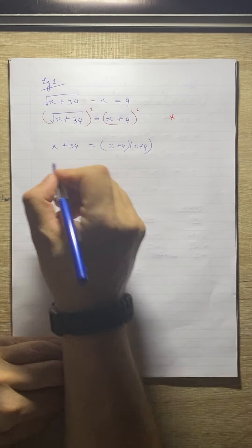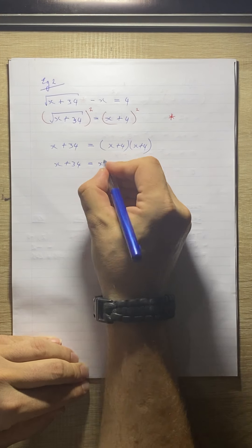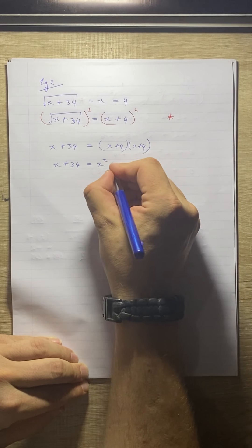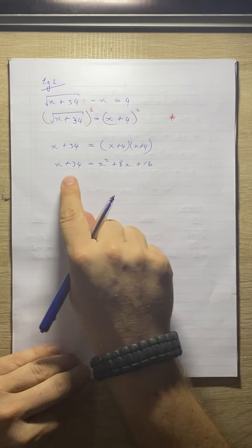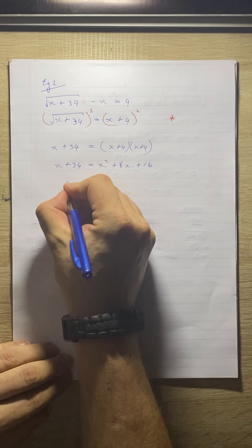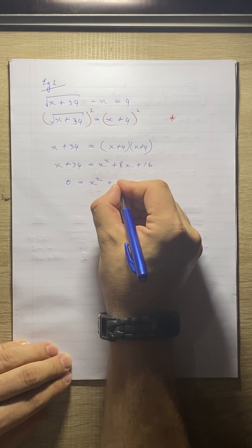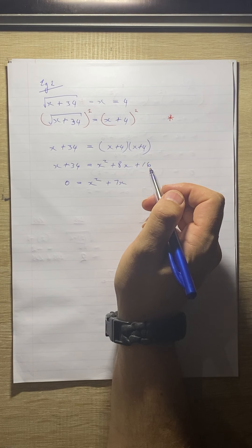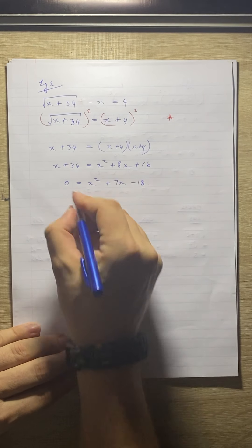FOILing that out: x plus 34 equals x squared — firsts give us x squared, outers give us plus 4x, inners give us plus 4x so that's plus 8x, and lasts give us plus 16. Taking everything to the right-hand side so the highest power of x is positive: 0 equals x squared, take that to that side it becomes minus so we get plus 7x, take that to that side it becomes minus and we get minus 18. We can factorize now.